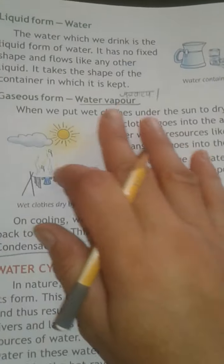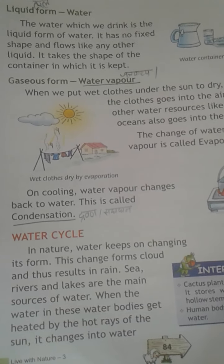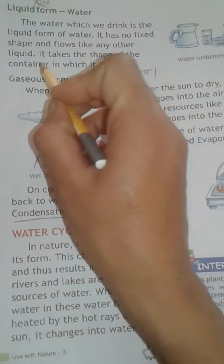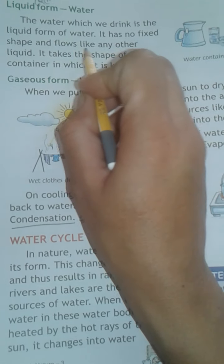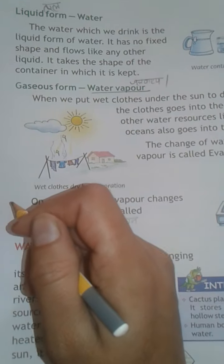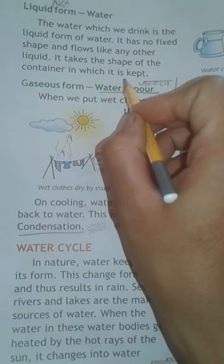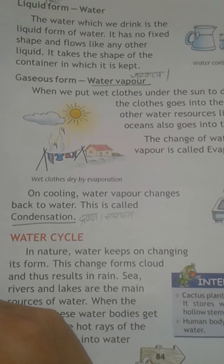Next है liquid form — liquid क्या होता है, तरल। जिस रूप में हम पानी पीते हैं वो liquid form होती है। The water which we drink is the liquid form of water. It has no fixed shape and flows like any other liquid. It takes the shape of the container in which it is kept.